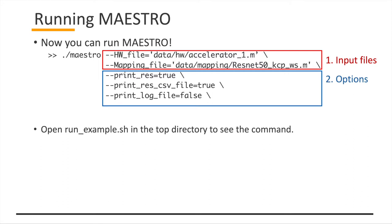This is a command you can execute. As explained earlier, there are two input files you have to provide as command line arguments: one hardware file and one mapping file. There are also some command line options, for example print results, print results CSV file, and print log file. If you open the run example script in the top directory, you'll be able to see those commands.